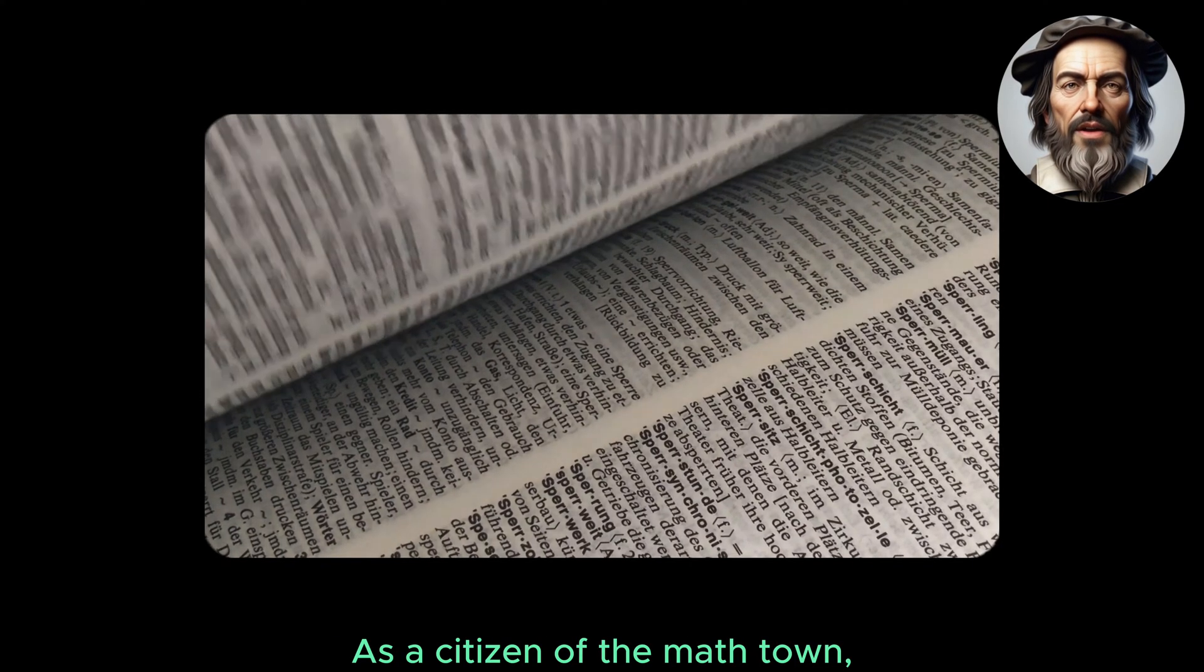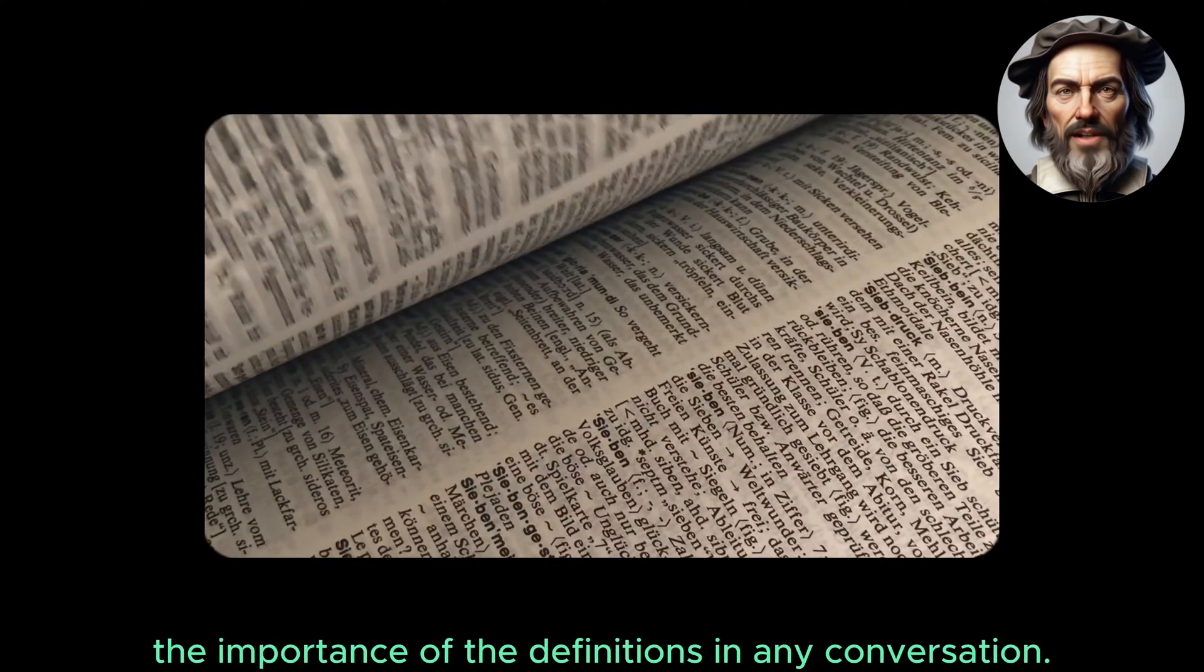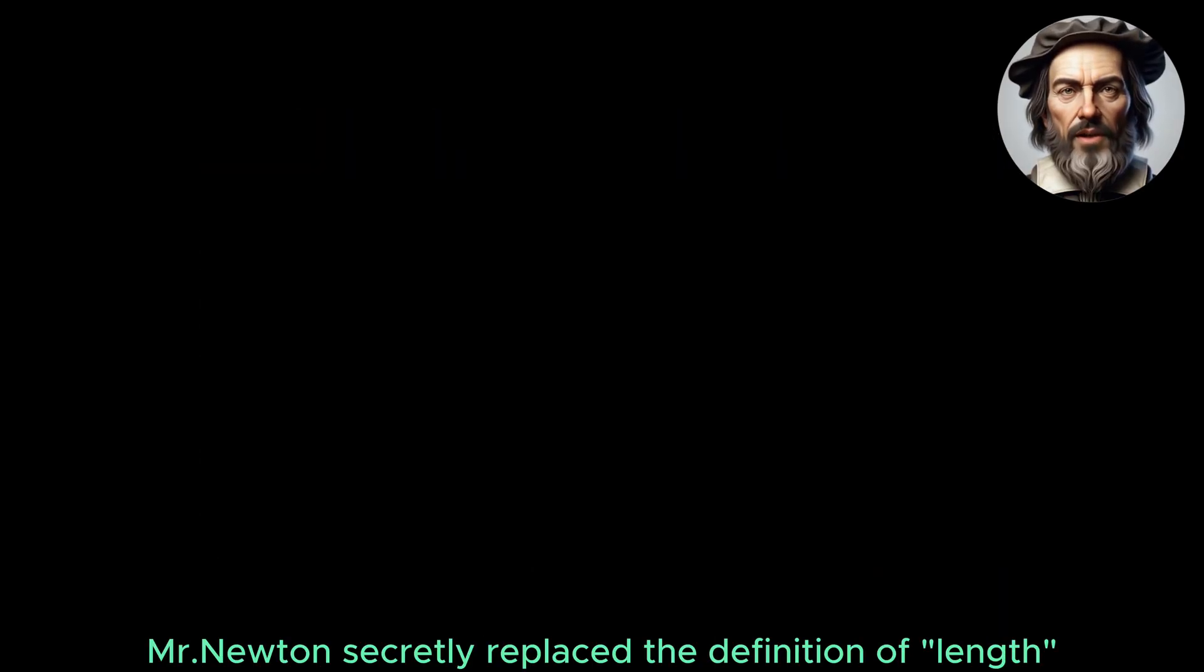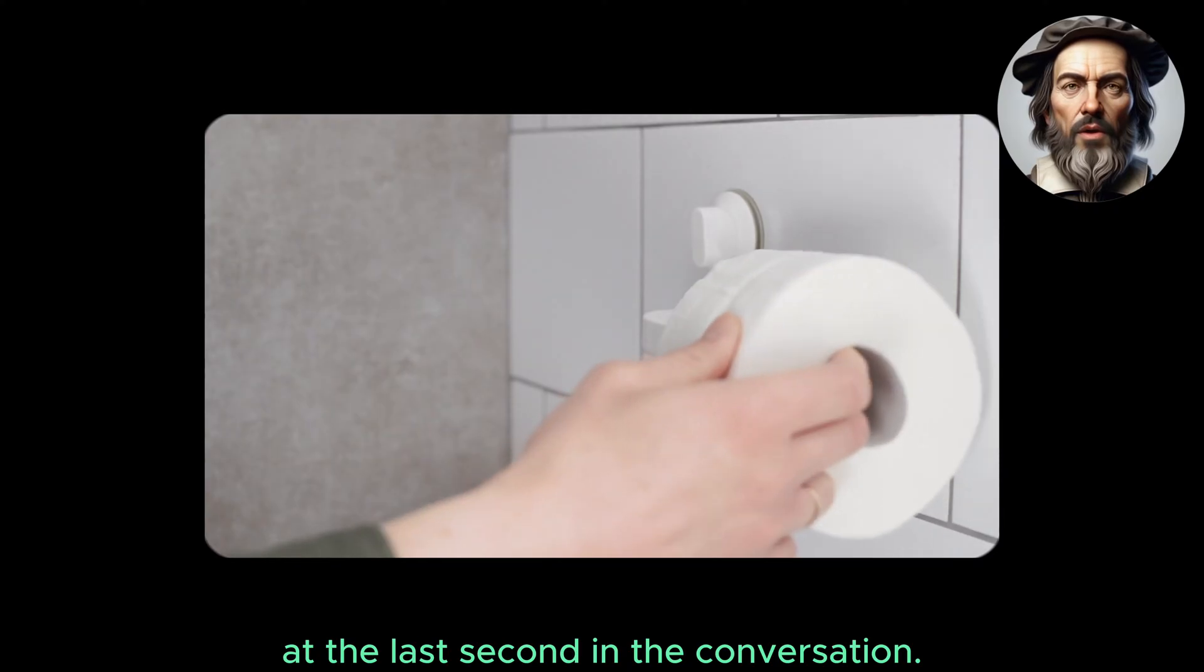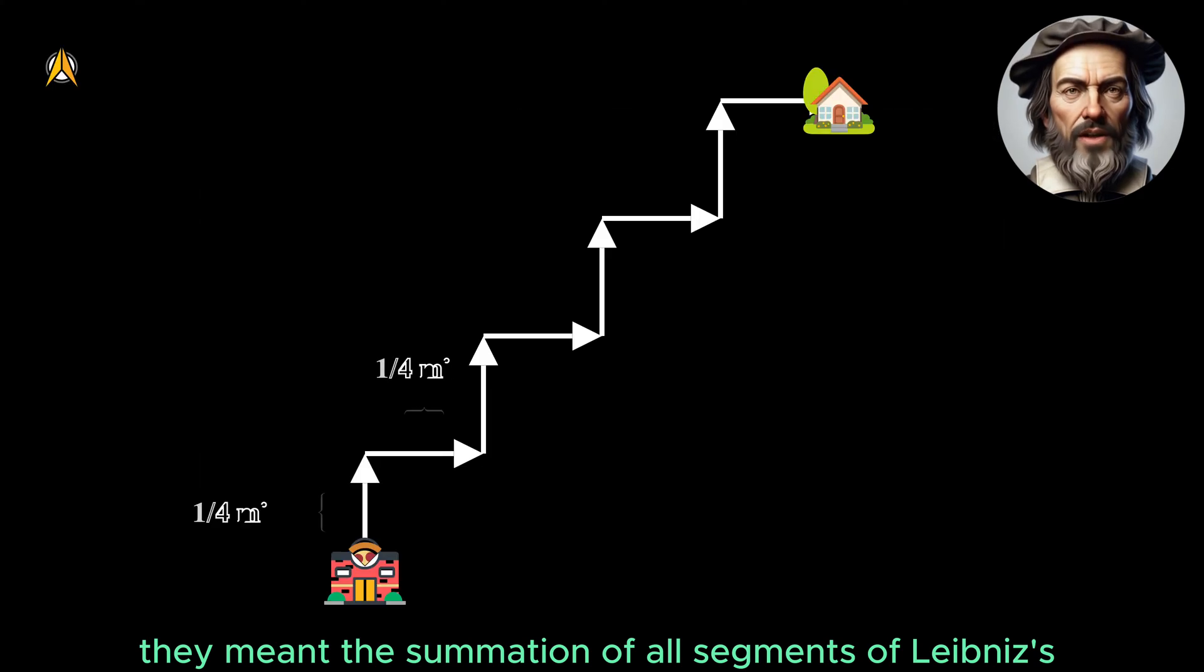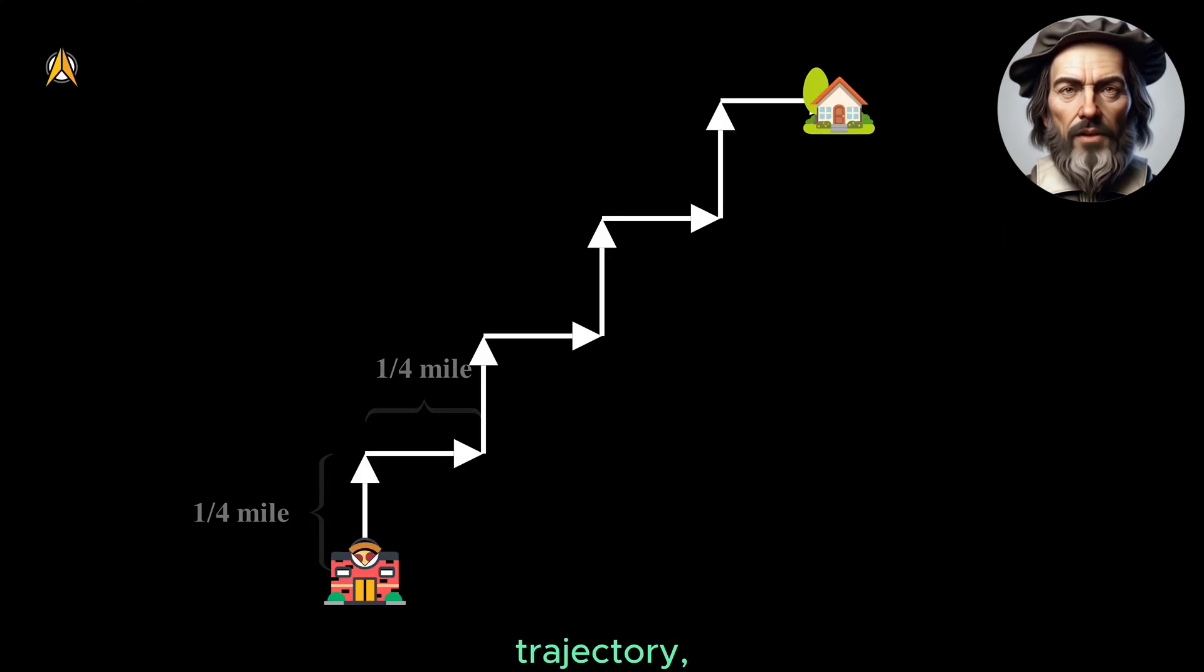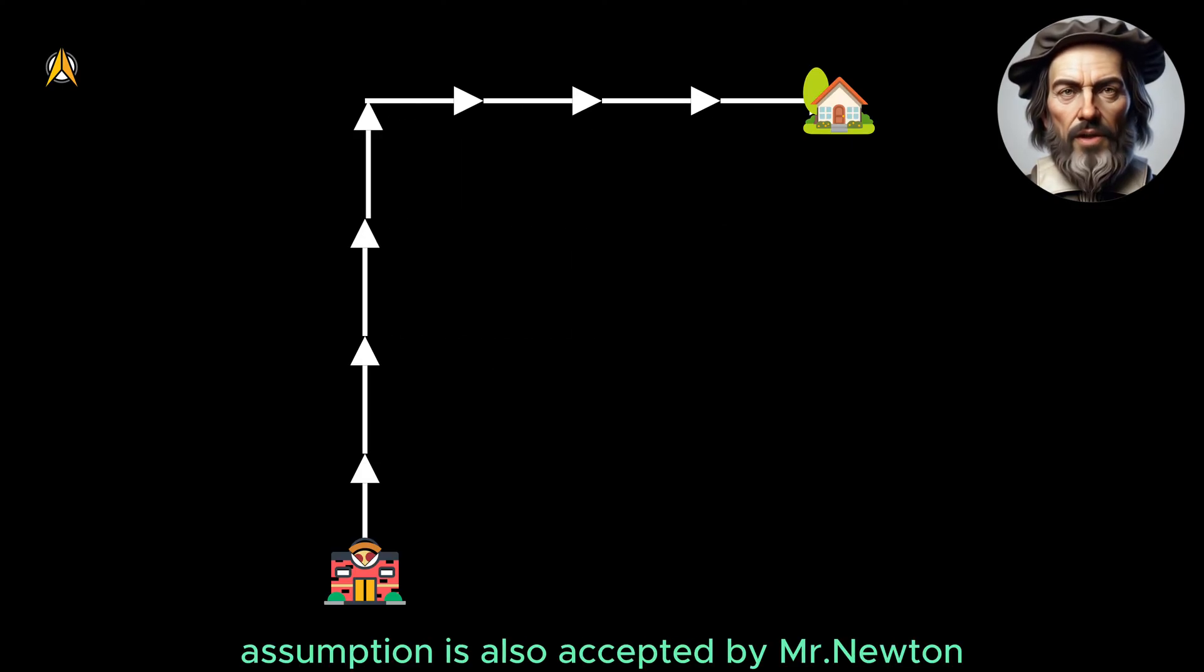As a citizen of the math town, you should be fully aware of the importance of the definition of length. Mr. Newton secretly replaced the definition of length at the last second in the conversation. When they originally said length, they meant the summation of all segments of Leibniz's trajectory, no matter how small each segment is. This implicit assumption is also accepted by Mr. Newton at the beginning.